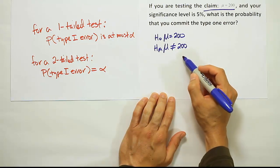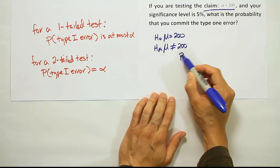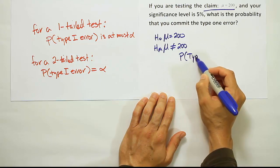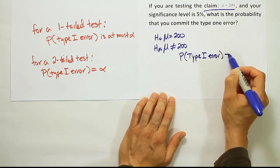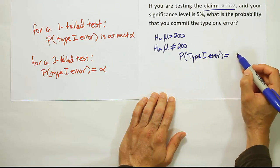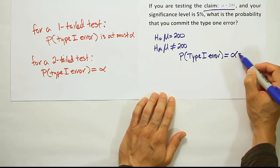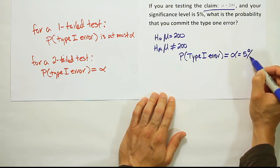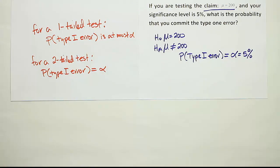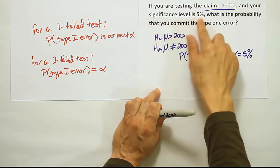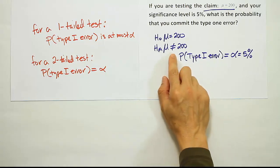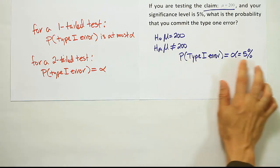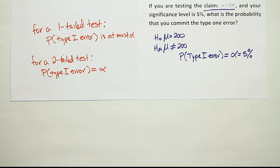And if it's a two-tailed test, the probability of a Type 1 error is going to be equal to alpha exactly, which in this case is 5%. We know it's 5% because the problem tells us the significance level is 5%. It's a two-tailed test, so the probability of a Type 1 error is exactly that alpha value.